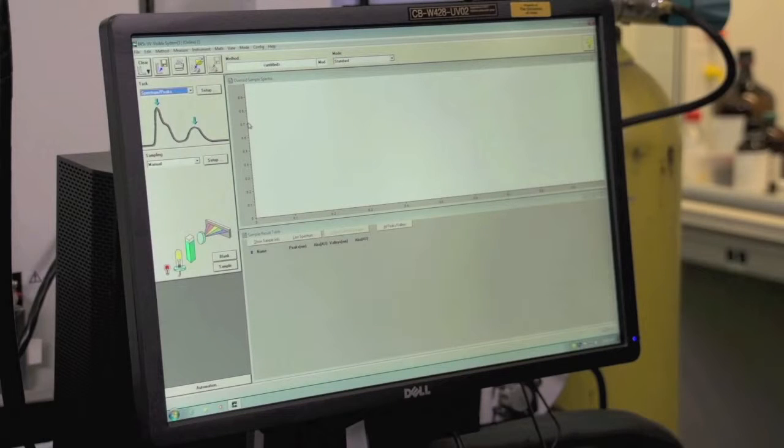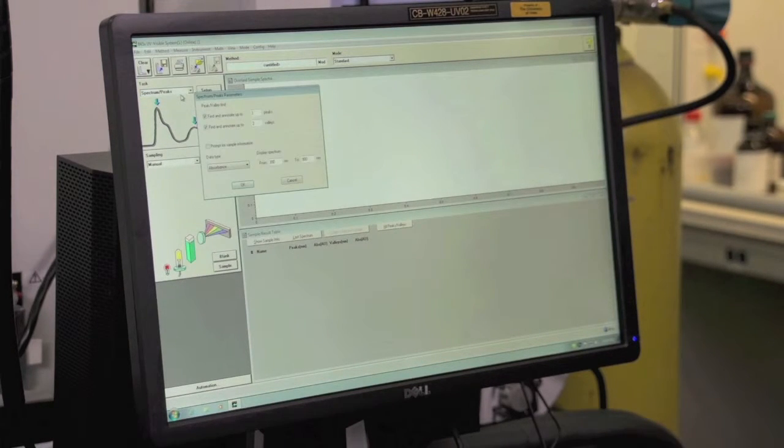Now we're ready to take the spectrum. Before collecting the background, we'll need to make sure that the software is set up properly. Go to methods, then check spectrum peaks, then go to method again and check setup analysis. We'll need to make sure that we have three peaks, but uncheck the three valleys section, and then make sure that the spectrum is displaying from 300 nanometers to 900 nanometers. Then select OK.